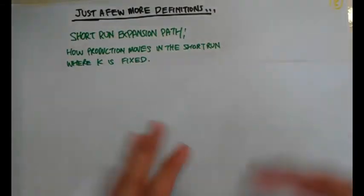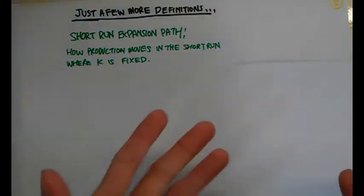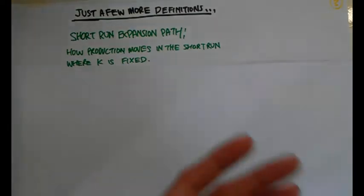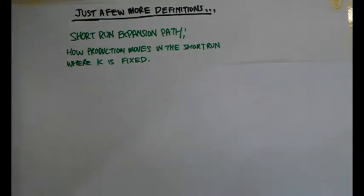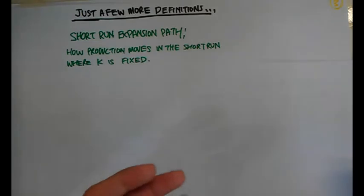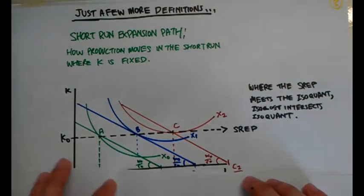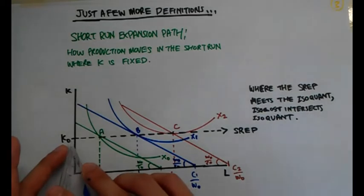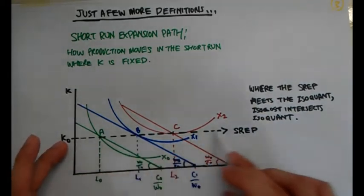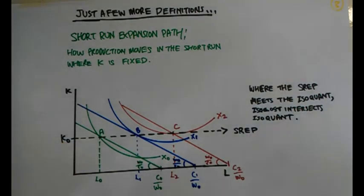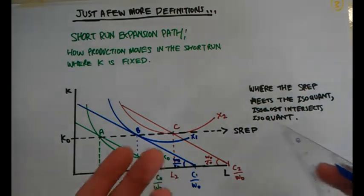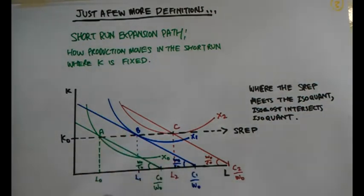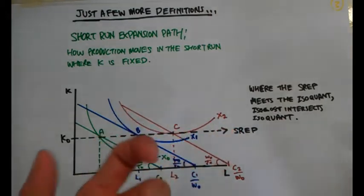A new addition to the framework is the expansion path — a line that shows how production moves in the short run or the long run. In the short run, capital is fixed, so there is one straight horizontal line because the amount of capital the firm has is fixed. The firm has to work with this fixed amount of capital. Wherever the Isoquant meets the expansion path, that is where we determine the cost.